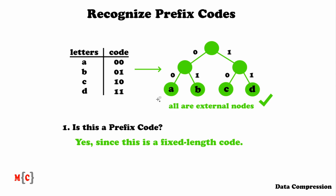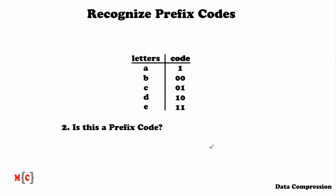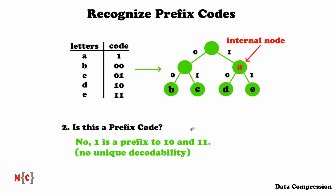Let's go to the next question. This code is very similar to the previous one — we have 00, 01, 10, and 11 — but now I've added the codeword 1 for the letter A. The answer is no, this is not a prefix code, because 1 is a prefix to 10 and 1 is also a prefix to 11. If you look more closely, there is no unique decodability: if you want to decode the string 11, you can either decode it as AA or as E — and again, this is very undesirable.